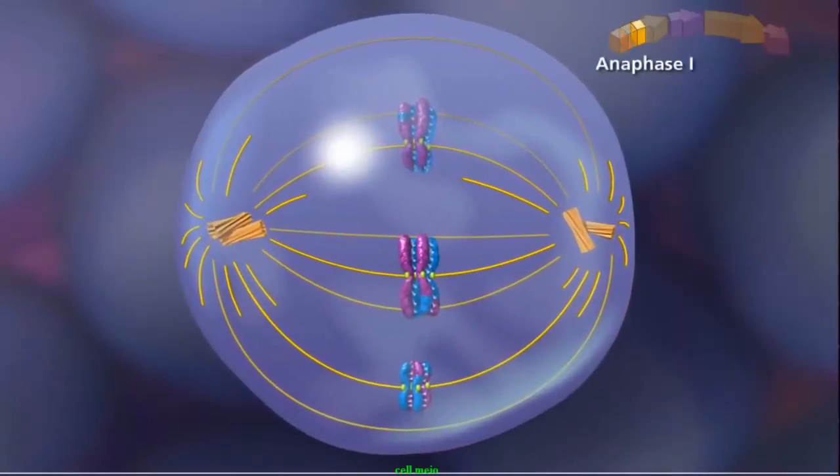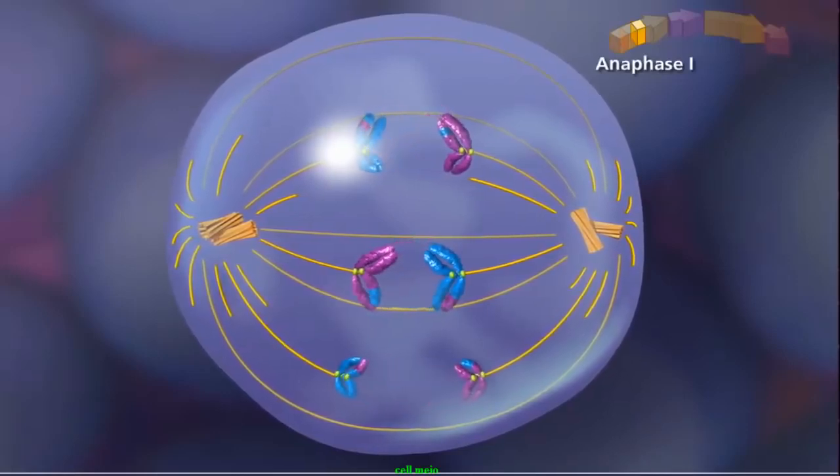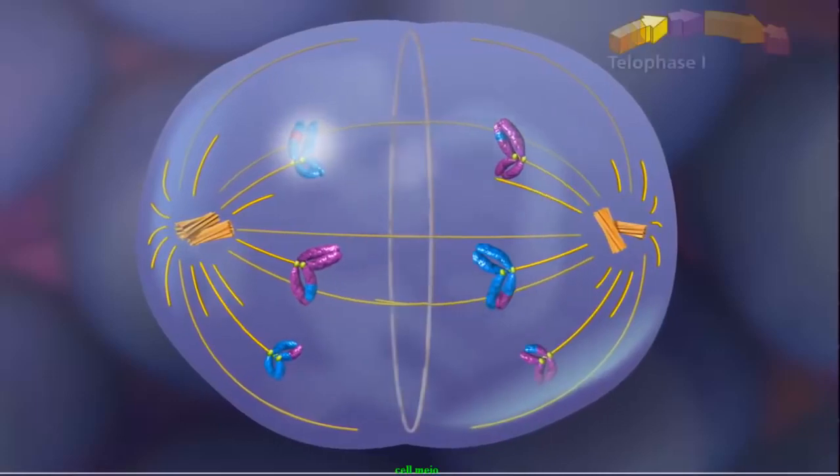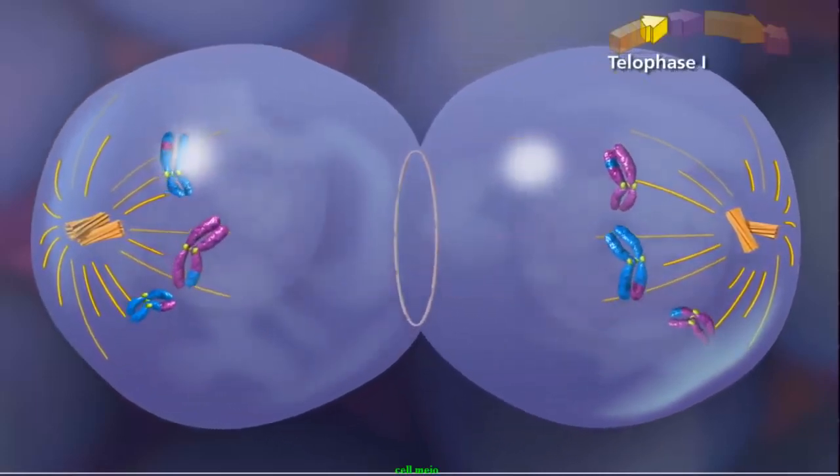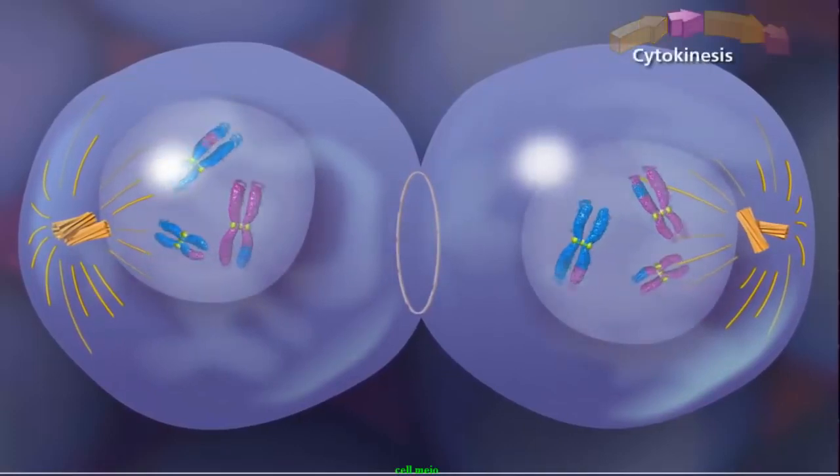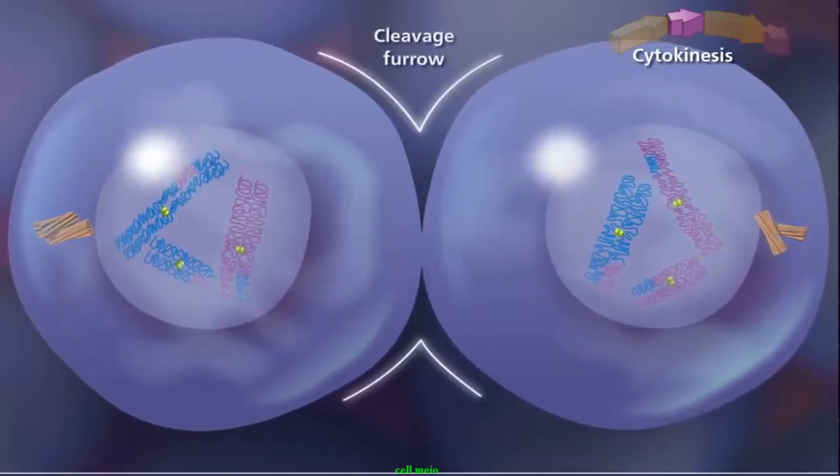In anaphase I, the homologous chromosomes separate and move toward opposite poles. Meiosis I ends with telophase I, when the chromosomes decondense and the nuclear envelope reforms. Cytokinesis separates the cytoplasmic material, and the two daughter cells are separated by a cleavage furrow.